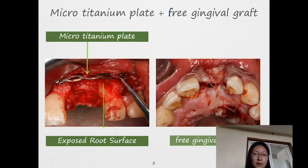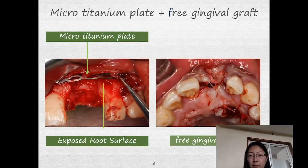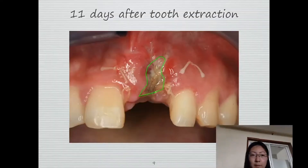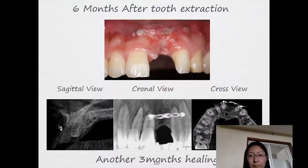After the extraction, we use a micro titanium plate to maintain the space as the labial wall of the socket. To cover the whole area, we use a free gingival graft. That is 11 days after tooth extraction. It is inevitable, and we can see the gradual epithelial creeping to the center of the area.